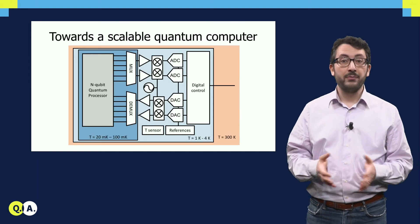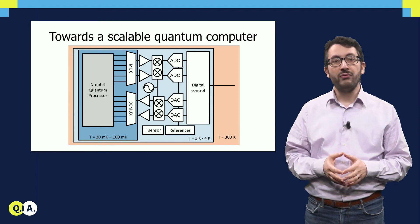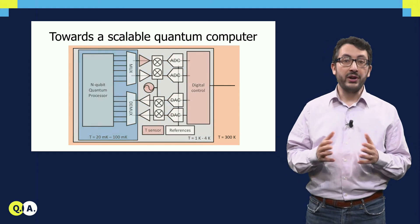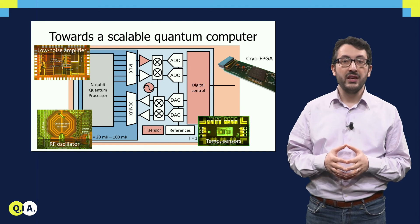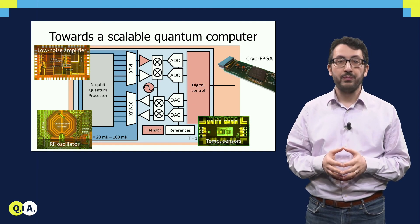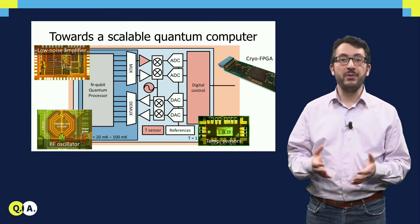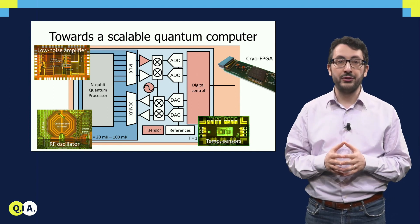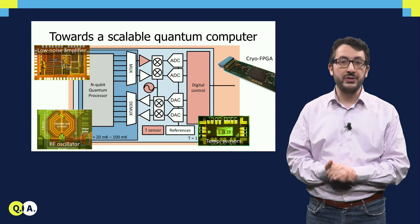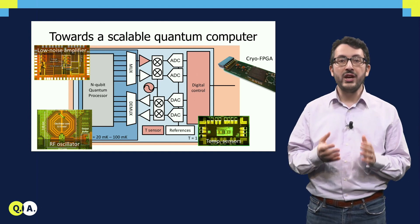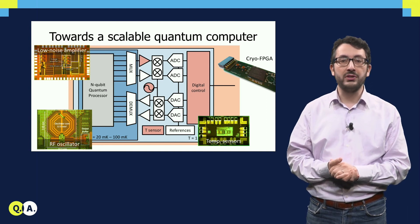Here at QTEC, we have already started implementing a number of blocks that will be the basis for building such a large system. For example, we have investigated how to use standard digital circuits like FPGAs operating at 4 Kelvin and below, and how to build temperature sensors integrated on silicon, RF oscillators and low noise amplifiers, all operating at cryogenic temperature. All these blocks are required in the electronic controller for quantum processors. And this cryogenic electronic interface will enable us to build the scalable quantum computers of the future.